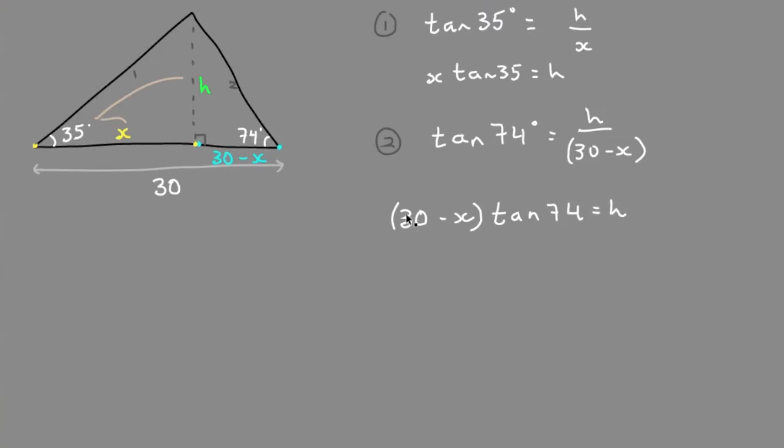Great. Now we have two equations and two unknowns, so we can solve the system of equations with substitution. Since the triangle 1 on the left and triangle 2 on the right share a side, they share the same height. Then we'll set the heights equal.